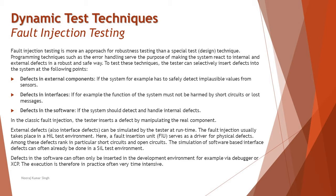In the classical fault injection method, the tester inserts a defect by manipulating the real component — interfering with the component's behavior to see how exactly the system responds or what behavioral change occurs when we manipulate some of the input values.